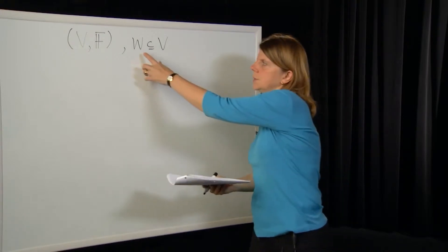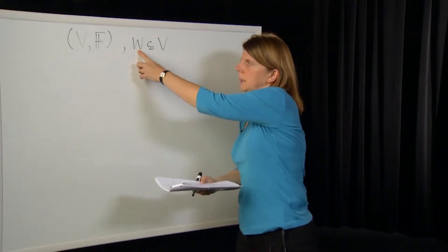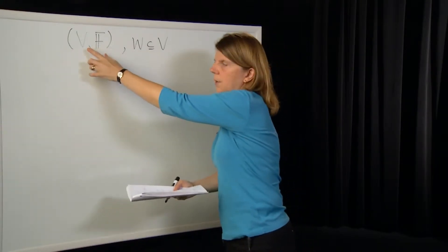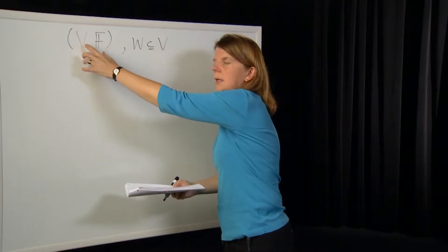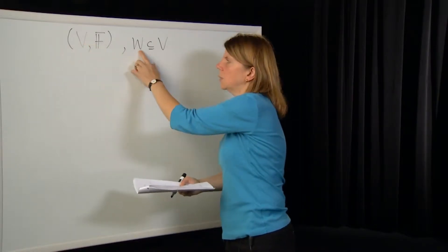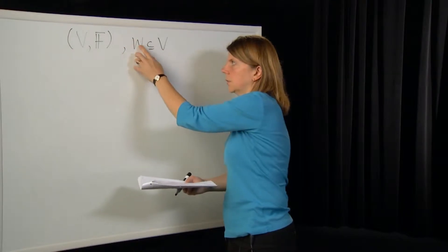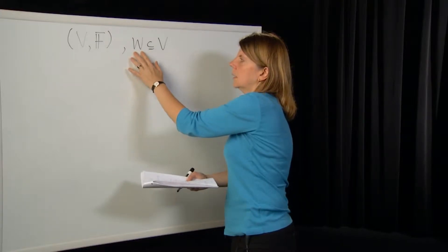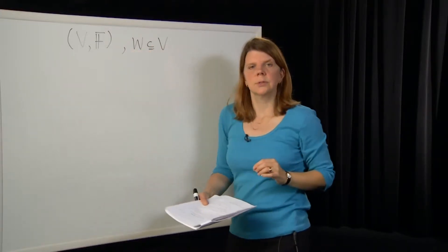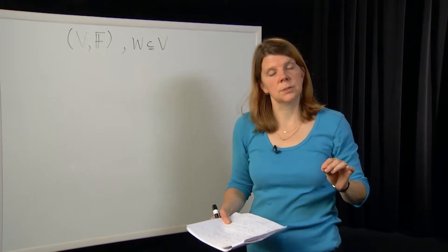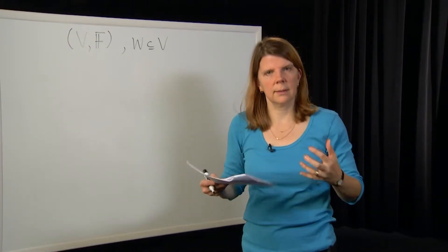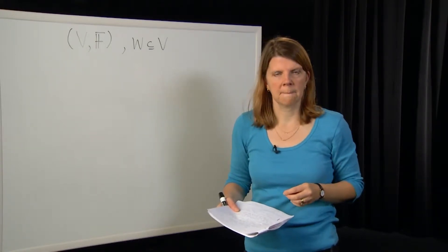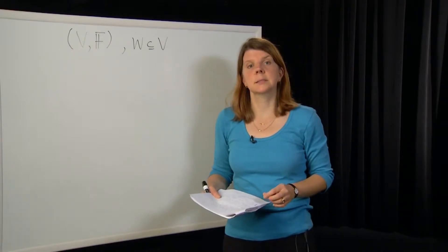We can ask: is W itself a vector space? The important question is whether, if you take the same operations of vector addition and scalar multiplication defined for V and apply them to elements of W — which in general has fewer elements — do you stay within W? That is, is W closed under vector addition and scalar multiplication? If it is, then W has a special name: it's called a subspace.